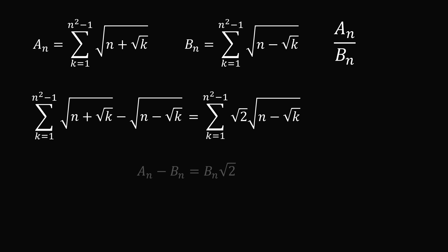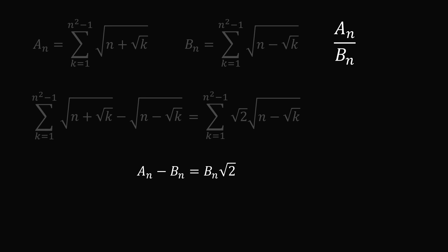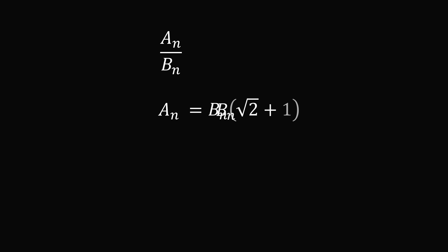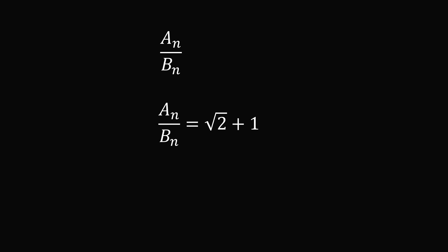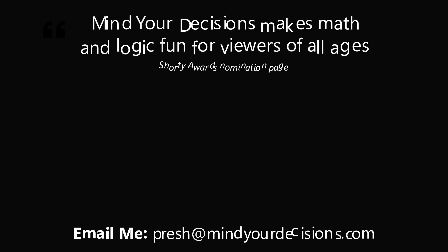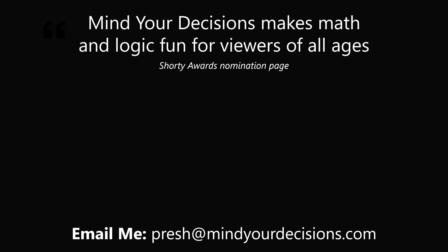Now we can simplify this formula tremendously. The left-hand side is equal to a_n minus b_n, and the right-hand side is equal to b_n multiplied by the square root of 2. We have a simple linear equation. We'll add b_n to both sides, then factor b_n on the right-hand side, and finally divide both sides by b_n. So we get a_n over b_n is equal to the square root of 2 plus 1. And that's the answer! Thanks for making us one of the best communities on YouTube. See you next episode of Mind Your Decisions, where we solve the world's problems one video at a time.